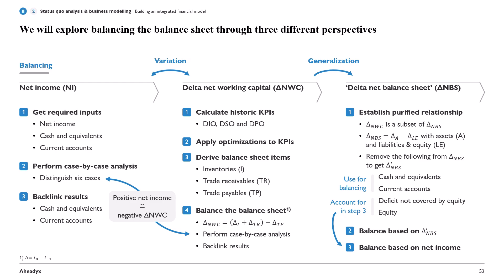For the first phase — net income — we will get the required inputs first: net income as such, and we will use the cash and equivalents and counter-counts for balancing, so we need to get these as well. Then we will perform a case-by-case analysis, distinguishing six different cases for balancing the balance sheet. We will backlink those into the cash and equivalents and counter-counts, and that finally balances the balance sheet.